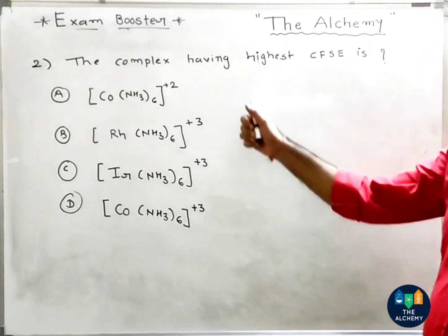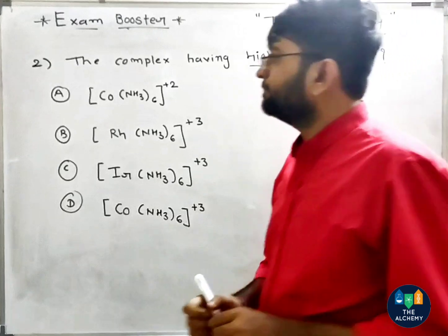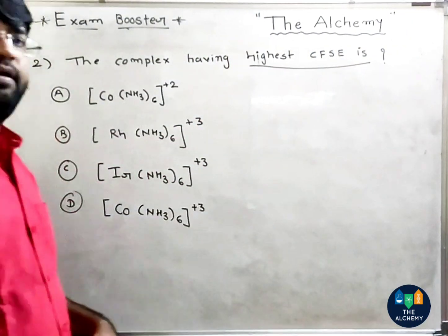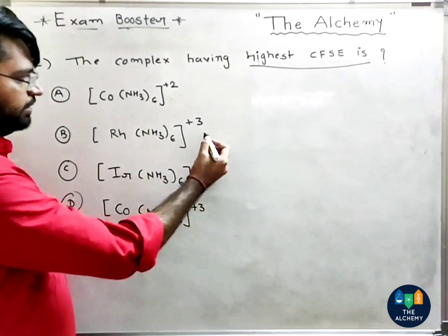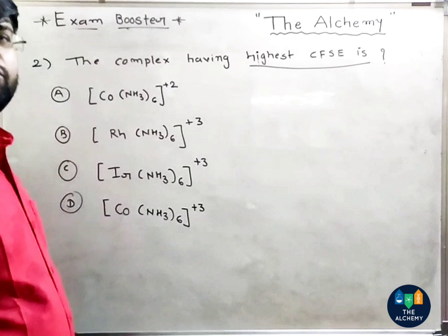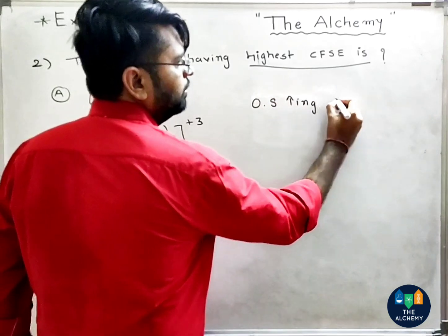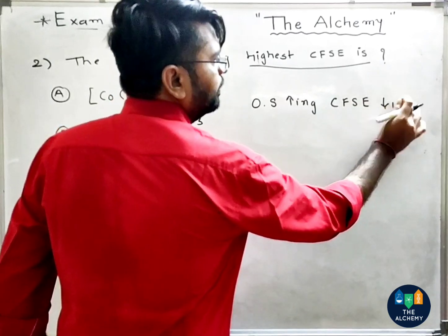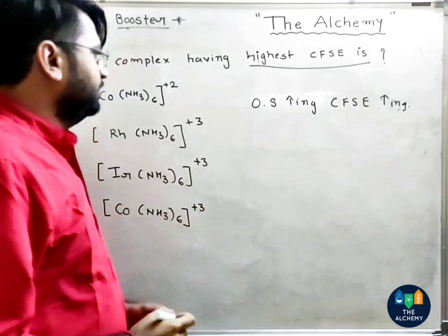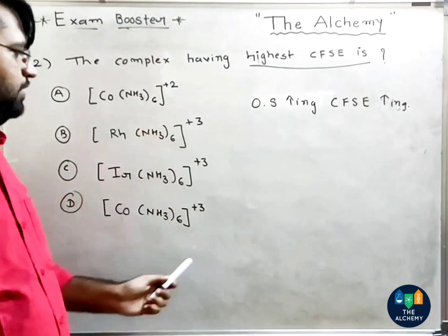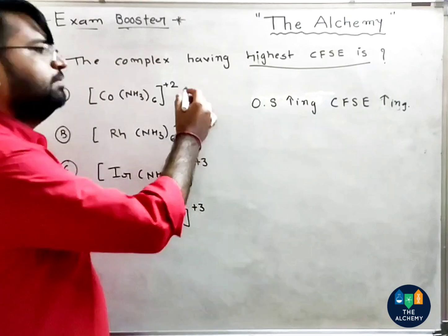The next question asks which complex has the highest CFSE. Looking at the factors affecting CFSE, we first check the oxidation state. One option has +2 oxidation state, another has +3 oxidation state. Since oxidation state increases means CFSE increases, +3 is greater than +2. CFC increases with higher oxidation state.